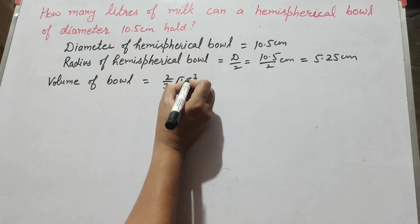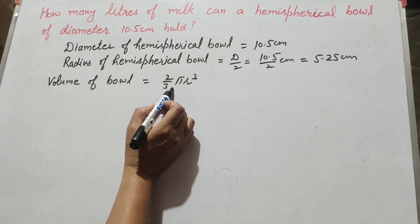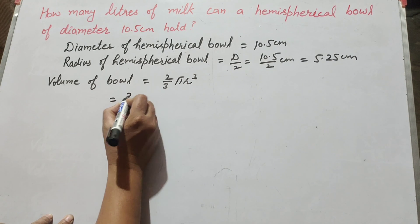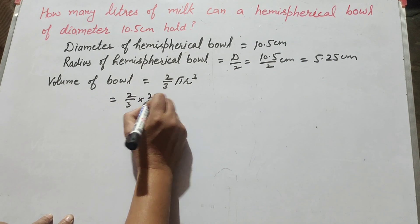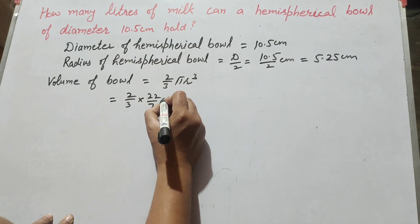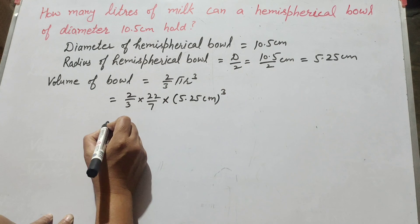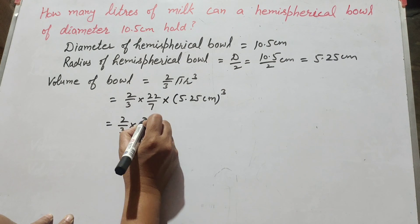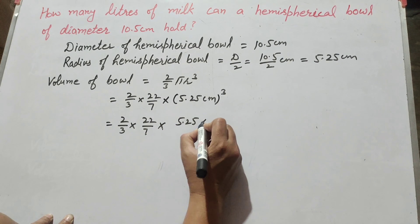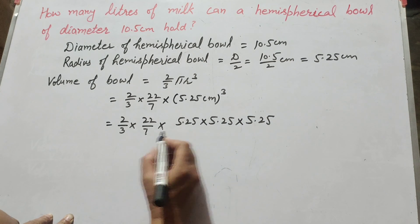Now we find the volume of the bowl. Since the bowl is hemispherical, we use the formula: Volume = (2/3)πr³. Substituting, it is equal to (2/3) × (22/7) × (5.25)³, that is 5.25 × 5.25 × 5.25 centimeter cube.